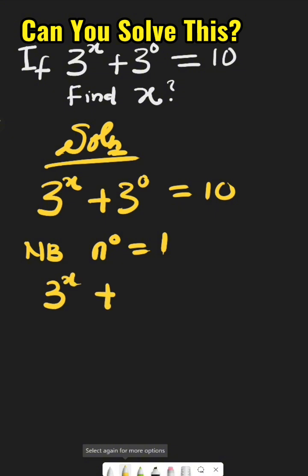plus 3 raised to the power of 0 becomes 1, equals 10. Next step, we collect the like terms, meaning numbers to one side. Whenever plus crosses the sign of equality, it becomes minus. So this becomes 3 raised to the power of x equals 10 minus 1. 3 raised to the power of x equals 9.